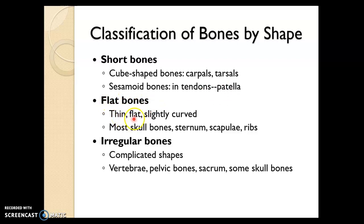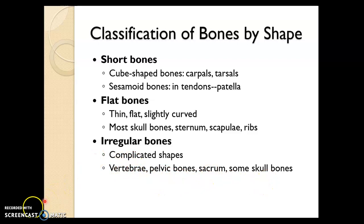Flat bones are thin, flat, and mostly curved. This includes most of your skull bones, your sternum which is your breastbone, your scapula which are your shoulder blades, and your ribs. Irregular bones are all the other bones that don't fit into the previous classifications because their shapes are complicated, like your vertebrae, pelvic bones, sacrum, and some of your skull bones.